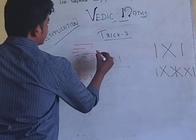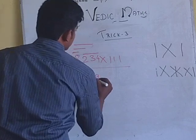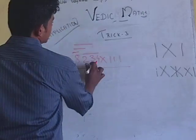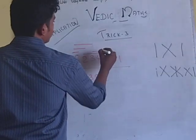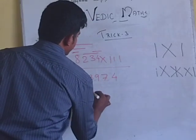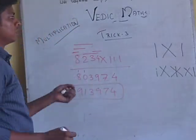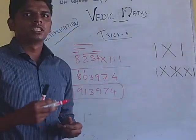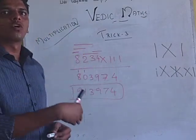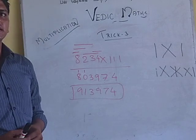Now, in the second, 2, 3 and 4. 2 plus 3 is 5. 5 plus 4 is 9. Next, 3 and 4. 3 plus 4 is 7. Next, 4. So, 9, 1, 3, 9, 7, 4. So this is for triple 1 multiplication. If we get 4, 5, 5, we can get the answer.